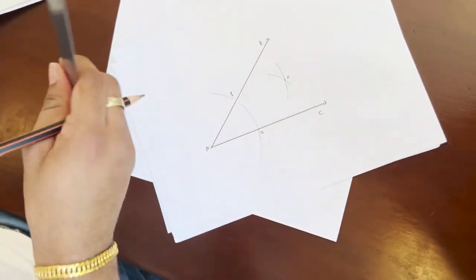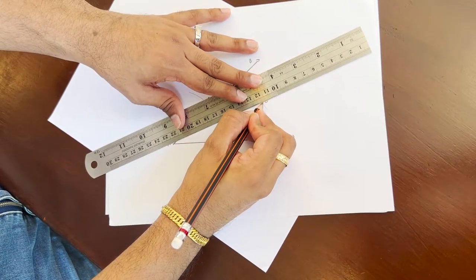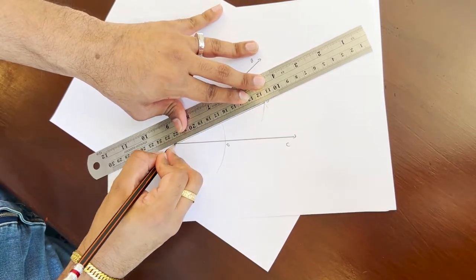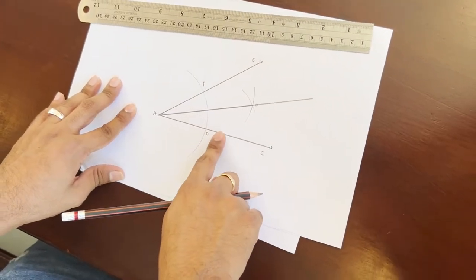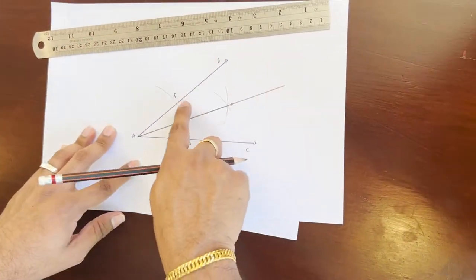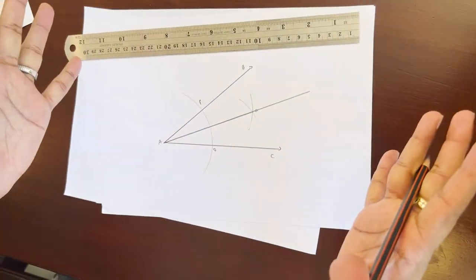Now I'm going to take this ruler and final step is I'm going to draw a line or a line segment that intersects this point. Voila. Now you see guys, we have created the angle bisector and what we mean by bisector, these two angles right here will be equal.